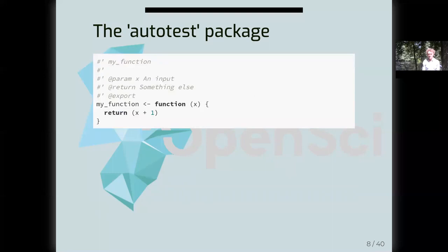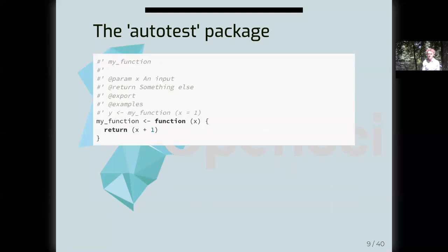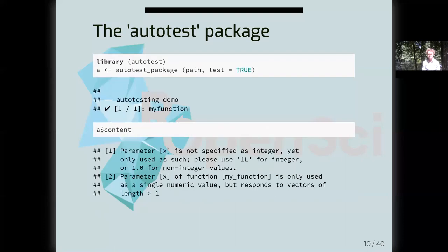We add an example by modifying our function's documentation, adding two more lines with an example where the value of x equals one. We then run Roxygen to update the documentation, run autotest_package again, and we see a tick saying one out of one functions was successfully autotested. The content of results now has two lines: first, that parameter x is not specified as an integer yet is only used as such, with advice to use 1L to explicitly specify an integer; and second, that x is only used as a single numeric value but responds to vectors of length greater than one.